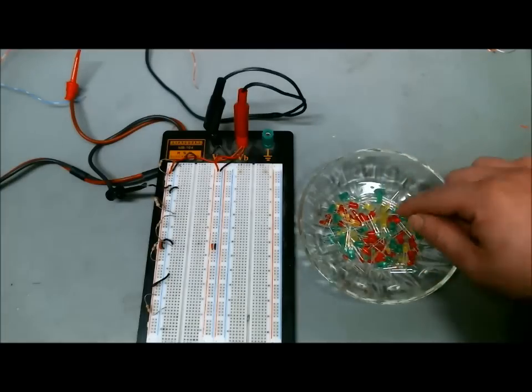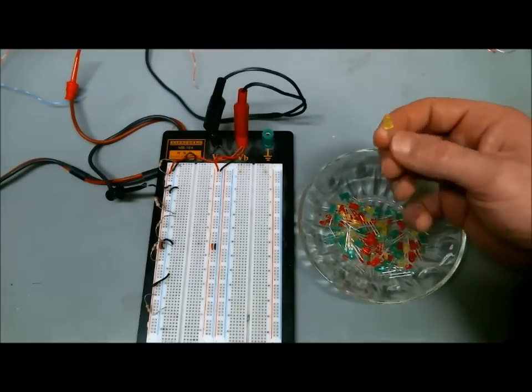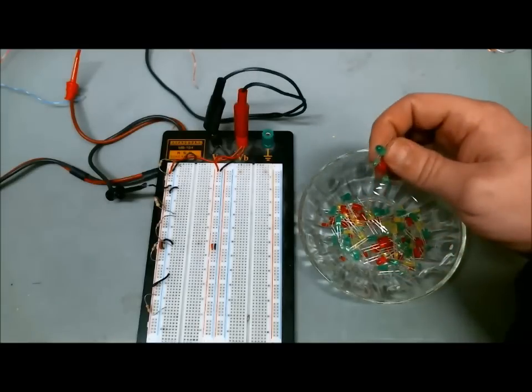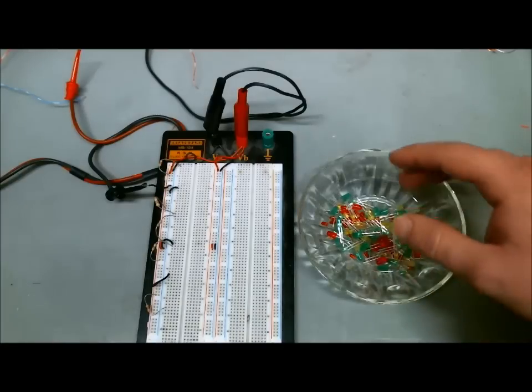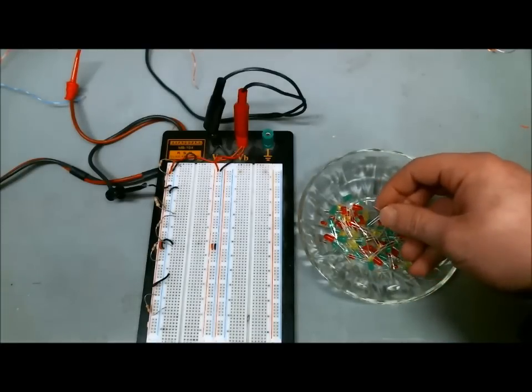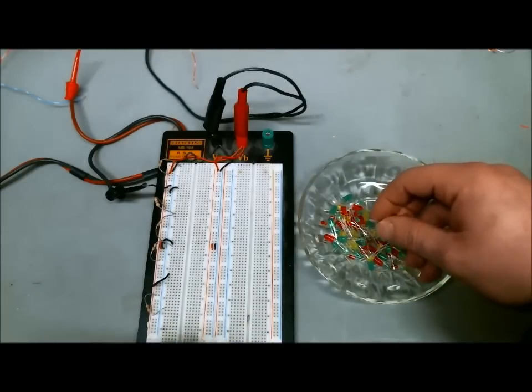Red being 1.8, orange or yellow being around 1.9, and green being around 2 volts. With that information you can place a number of LEDs in series to achieve a set voltage drop for them to turn on.